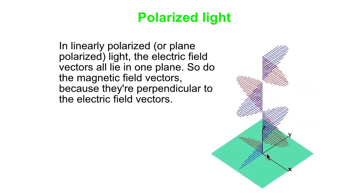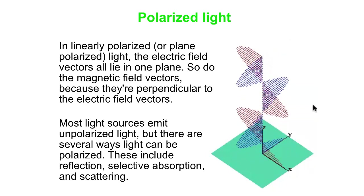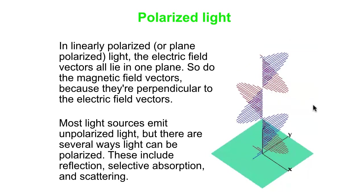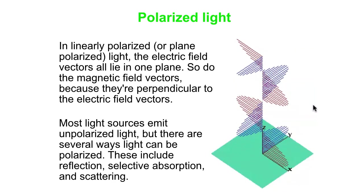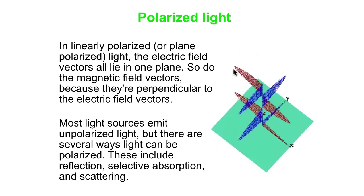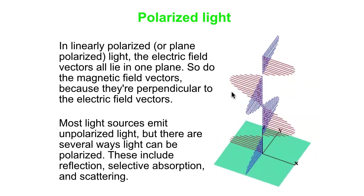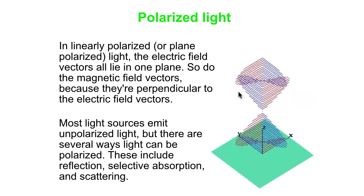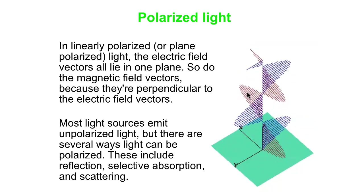In linearly polarized, or plane polarized light, the electric field vectors all lie in a single plane. That's what we're seeing in the animation. One color is for the electric field vectors, the other color is for the magnetic field vectors. You can see that those are at 90 degrees to one another, and they're also each 90 degrees to the direction the wave is propagating.